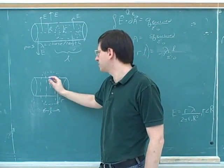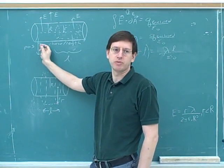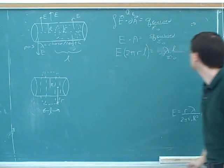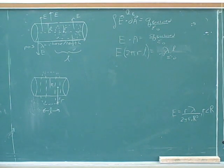And in this case, the Gaussian surface does enclose the entire cylinder, so we don't need to set up any proportion. We should just use the original lambda, which refers to the entire cylinder. Good. So then what?